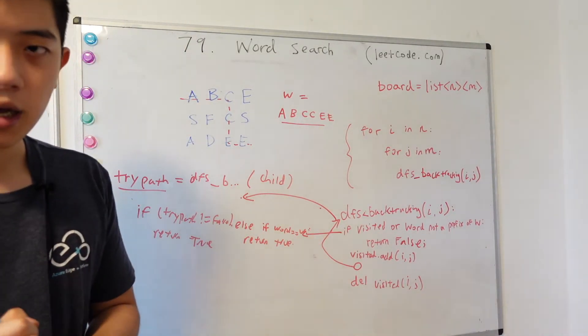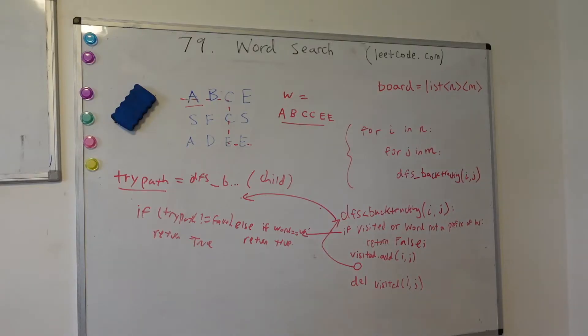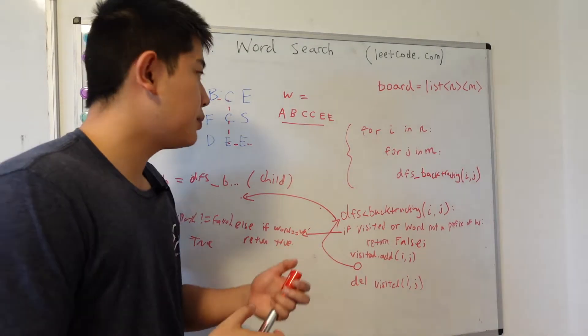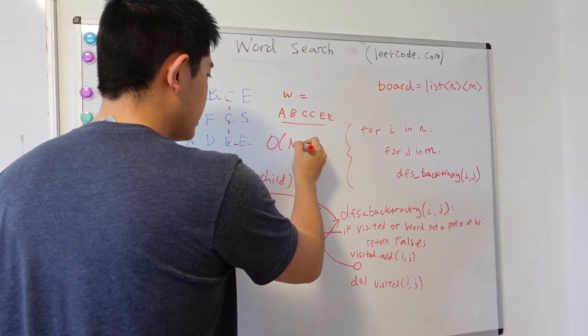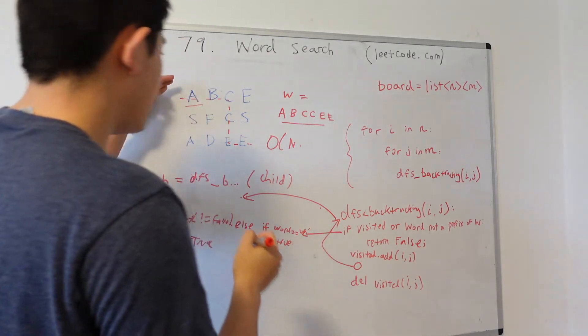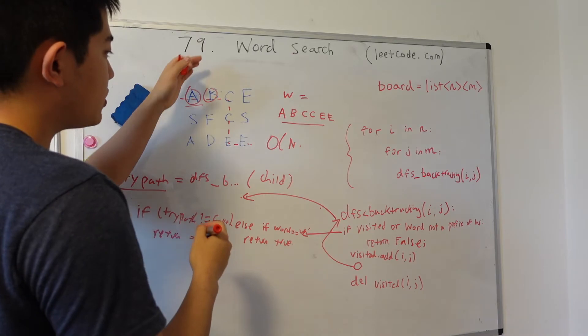So yeah, that's the approach, the algorithm. And so the time complexity of this algorithm is going to be big O of n times. So we start the DFS on every single node that we traverse.